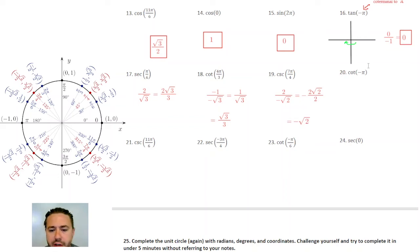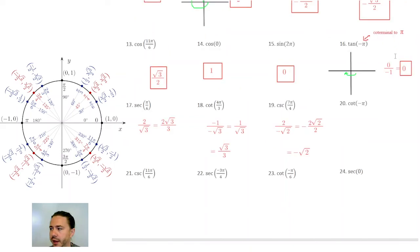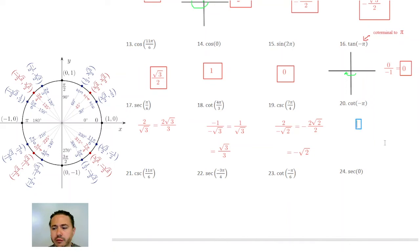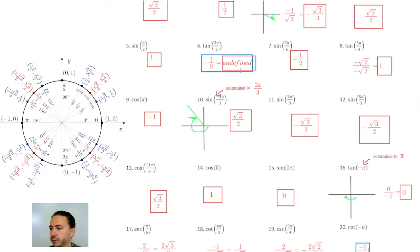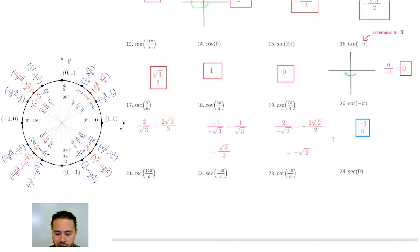For cotangent of negative π: we showed above that negative π is coterminal to π, so we're looking for x over y. That would be negative 1 over 0. As we mentioned before, you can't divide by 0 — we had a similar problem with tangent of 3π over 2 — so anytime you try to divide by 0, just call it undefined.